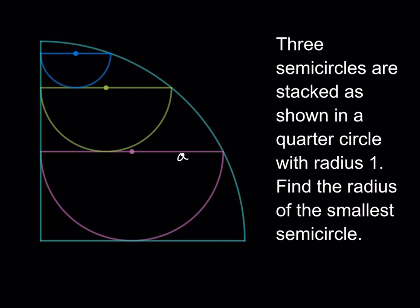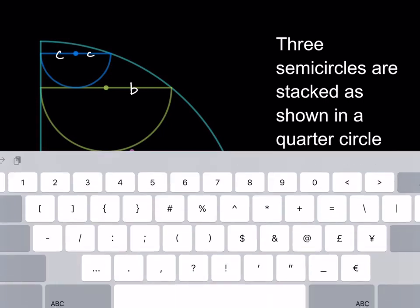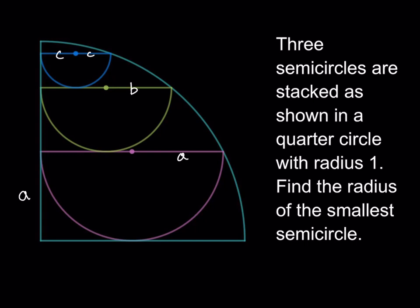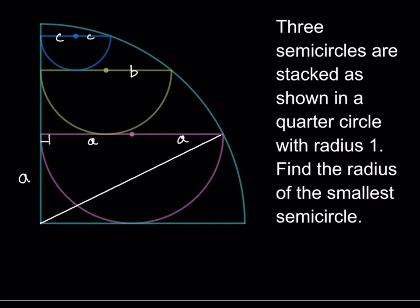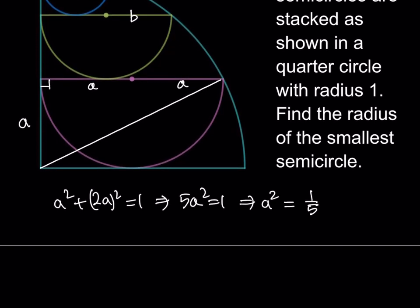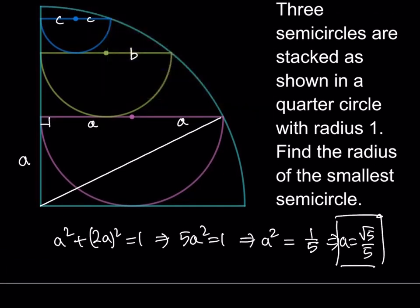Let's call the radii here A, B, and C. This height here is also A, and I'm going to make a crucial connection to use the Pythagorean theorem. This distance is also A, so we have A squared plus (2A) squared equals 1, which means 5A squared equals 1. From here we get A squared equals 1/5, and A equals 1 over root 5, which is square root of 5 over 5. That's the radius of the largest semicircle, and the hypotenuse equals 1 because we have a quarter circle with radius 1.